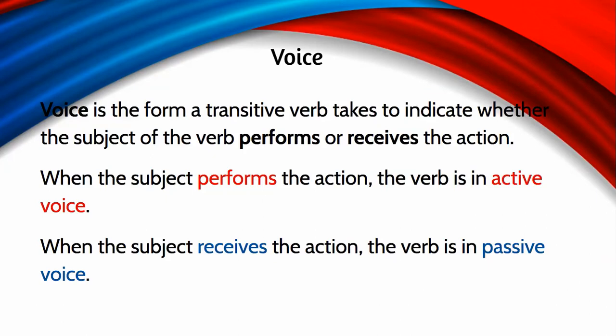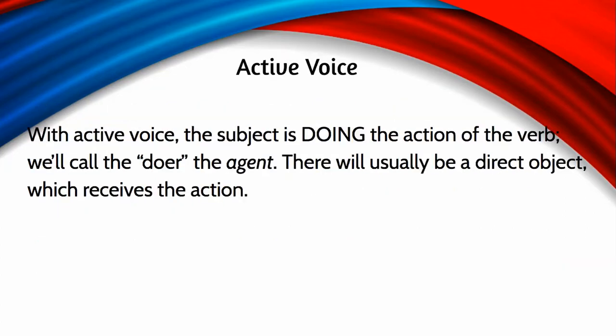Voice is the form that a transitive verb takes — and a transitive verb is an action verb that has a direct object — to indicate whether the subject of the verb performs or receives the action. When the subject performs the action, the verb is in active voice; when the subject receives the action, the verb is in passive voice.